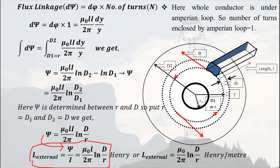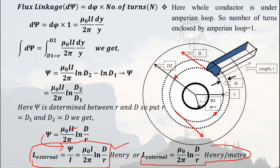External inductance equals flux linkage divided by current. So L_ext = Ψ/i = (μ₀l / 2π) · ln(d/r). On dividing this expression by length l, we get external inductance in henry per meter: L_ext = (μ₀ / 2π) · ln(d/r) H/m.